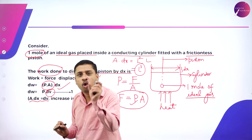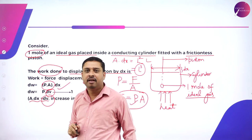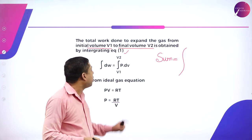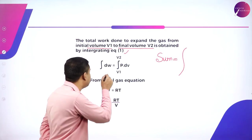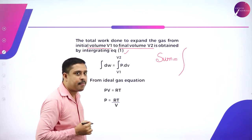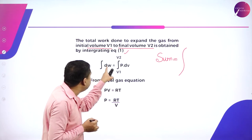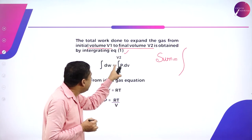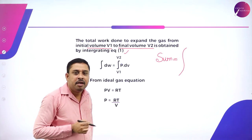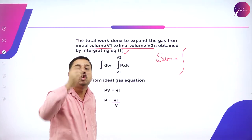dW is the small amount of work done to increase the volume by a small factor dV. If a considerable change in volume has to occur, integrating equation one means: integral dW equals integral of P dV, with lower limit V1 and upper limit V2. You are integrating between two limits — the lower limit is V1 and the upper limit is V2.